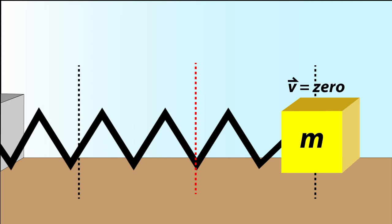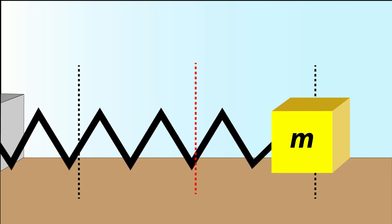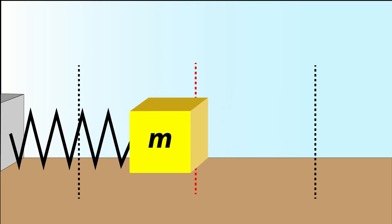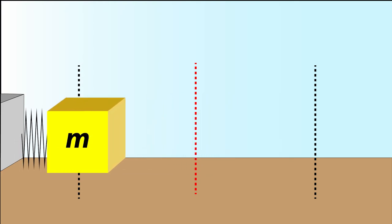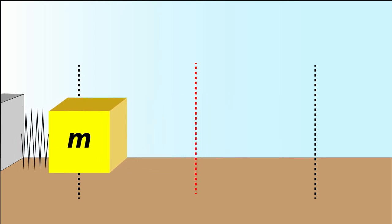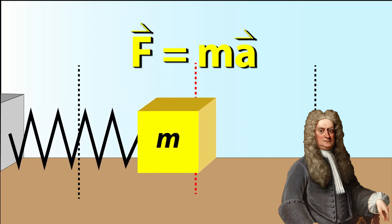Right now, the mass is at rest. As we release the mass, it starts to accelerate back to the left. Why does it accelerate? Because a force from the spring is being applied to it. According to Newton's second law, any net force causes acceleration.